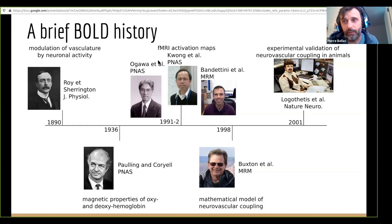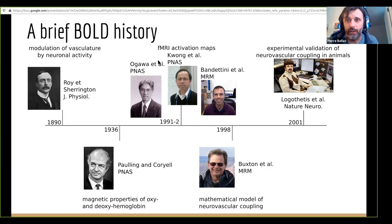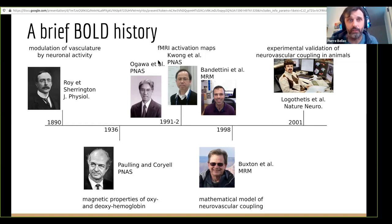In 1998, Richard Buxton proposed the first biophysical/physiological model of the neurovascular coupling — from neurotransmitters to blood oxygenation and flow. And finally in 2001, Nikos Logothetis published landmark papers showing that in animal models, local field potential and multi-unit activity correlate really well in the visual cortex with the BOLD signal. That's all I have on the BOLD signal.